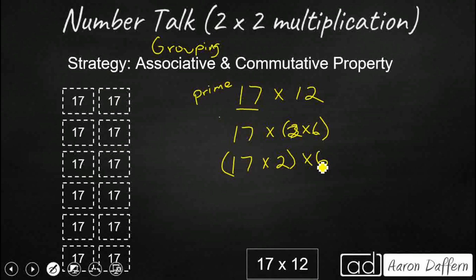This is where my commutative property is going to be helpful. Because I don't really want 17 groups of 2. That's going to be a bit much. Let's switch the order. You can switch the order of multiplication factors and still get the same result. I want 2 groups of 17.